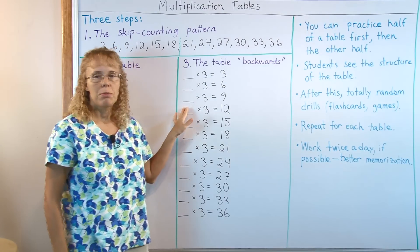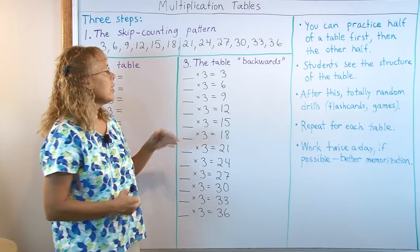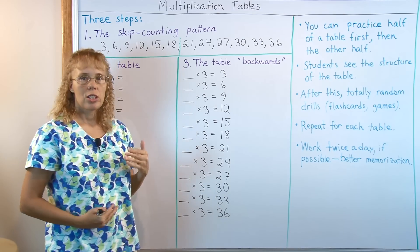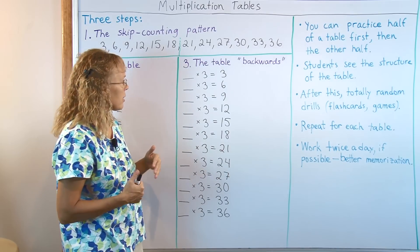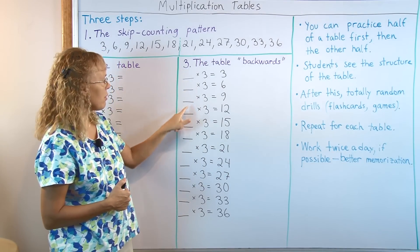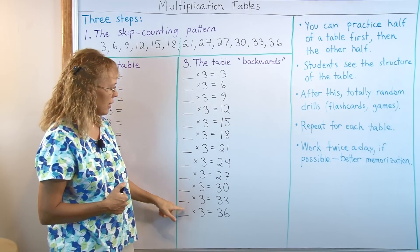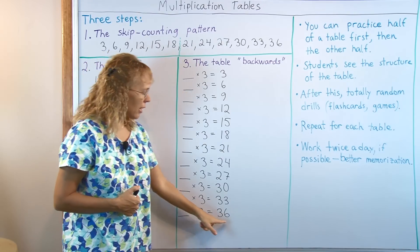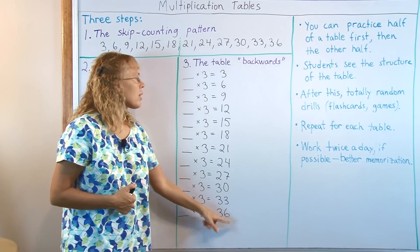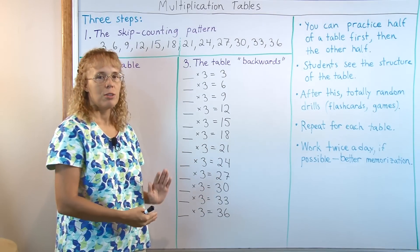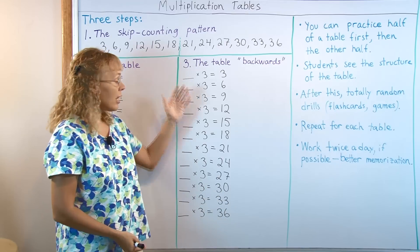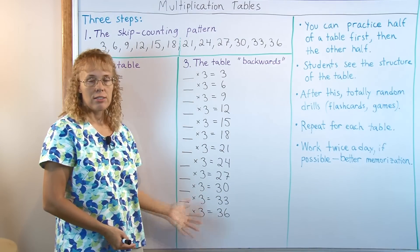Let's go now to the last step which is the table backwards. In this step students learn to associate the numbers 1, 2, 3, 4, 5, 6, 7, 8, 9, 10, 11, 12 with the actual answers from the skip counting list. And this of course prepares them for division. For basic division facts. They actually learn the basic division facts right here.